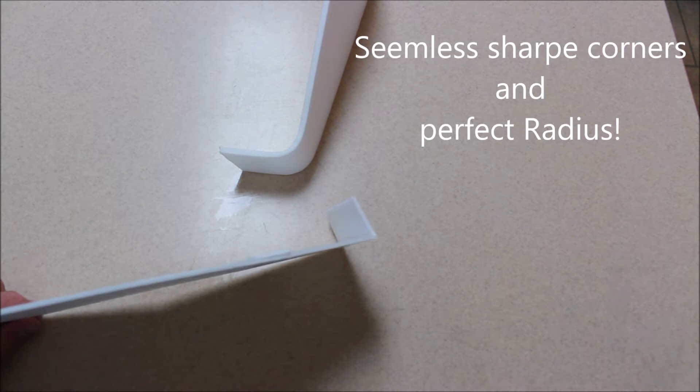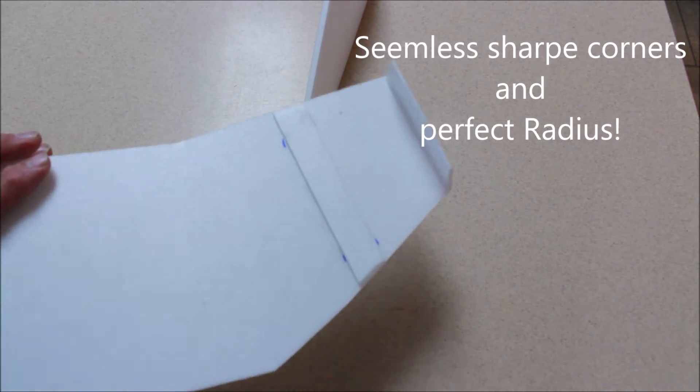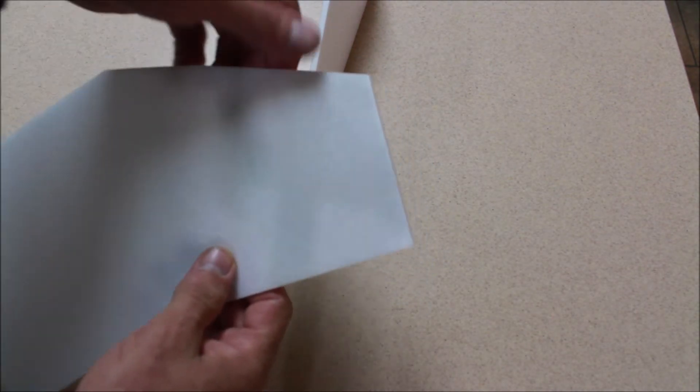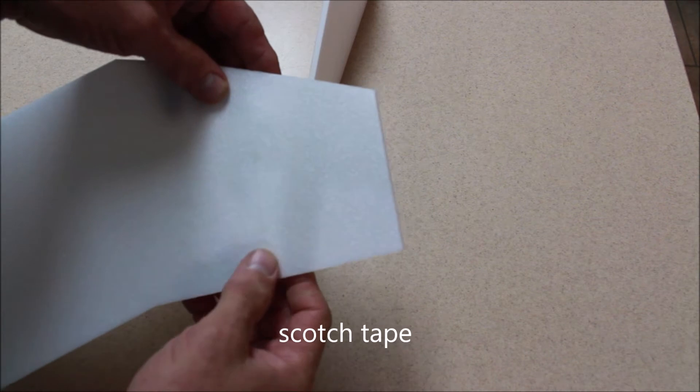Here's what Depron can do. This is the three millimeter Depron. What I do is actually a butt joint here where there's two pieces and I just tape these two pieces together. There's a little seam right here.